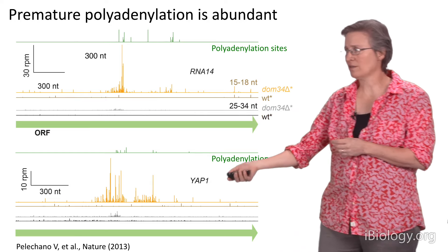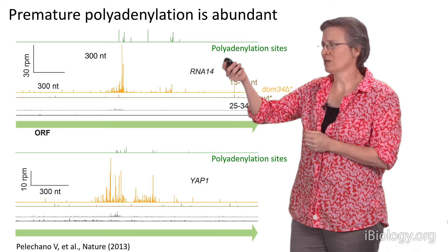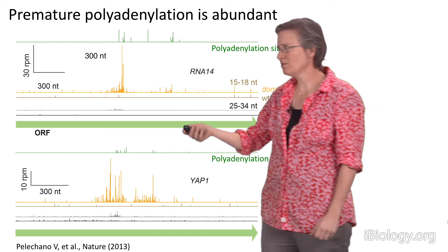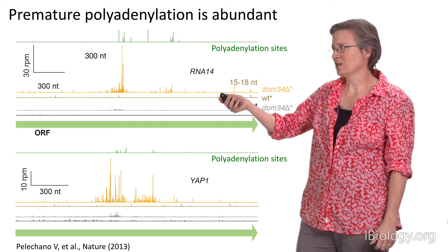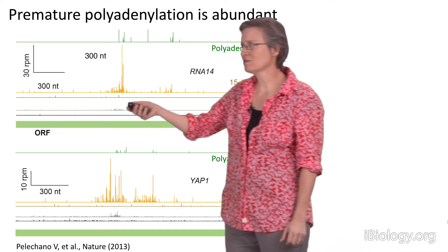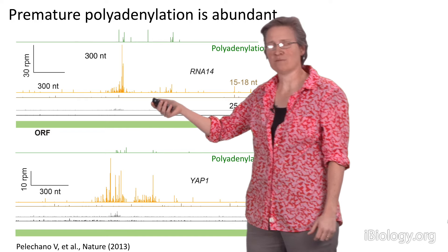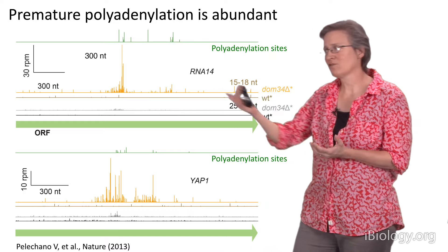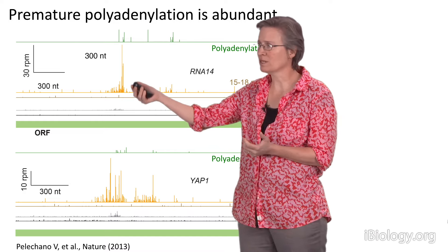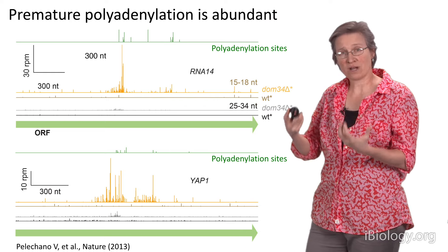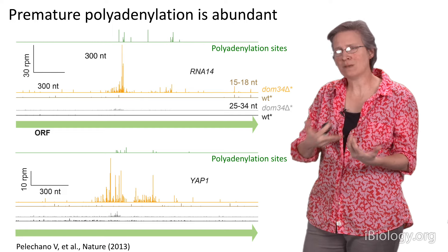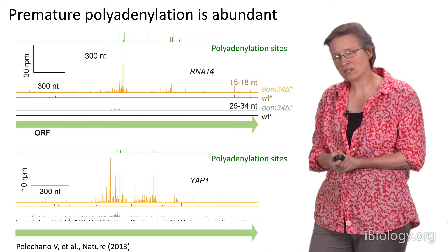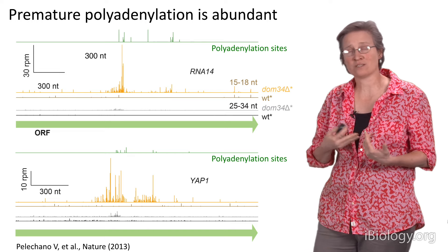RNA14 and YAP1 are yeast genes known to be prematurely polyadenylated, and previous results from Pelliciano et al. 2013 identified premature polyadenylation sites using RNA sequencing. Using our DOM34 delta strain and looking for long and short reads, we see a clear signature of ribosomes stuck on endonucleolytically cleaved messenger RNAs resulting from ribosomes reading into polylysine. Broadly across yeast, as many as 50% of genes we examined show piles of ribosomes in their middles when DOM34 is knocked out, suggesting premature polyadenylation is a very regular event.